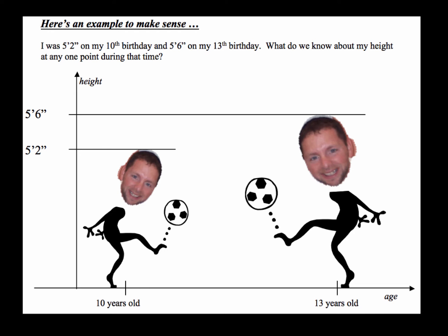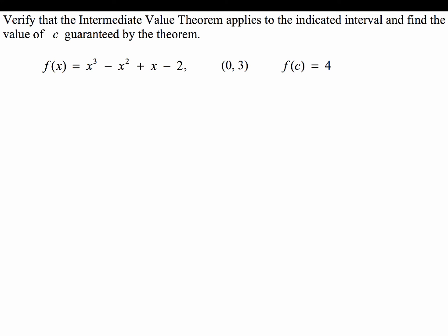Now we're going to take a look at a calculus example. For this problem, we've got to verify that the Intermediate Value Theorem applies to the indicated interval and find the value of c guaranteed by the theorem. So we're going to break this up into two pieces. We've got our function f(x) = x³ - x² + x - 2 on the interval [0, 3]. And the y value that we're trying to find is 4, so we want to know what value of c, what x value gives us a y value of 4.